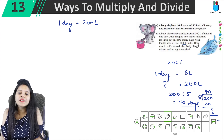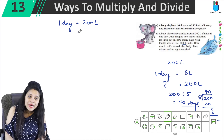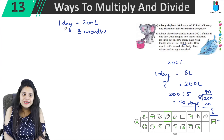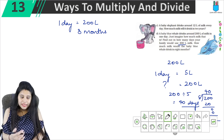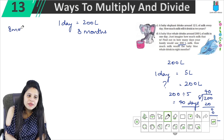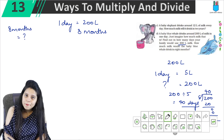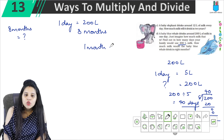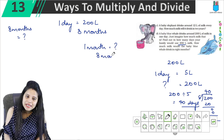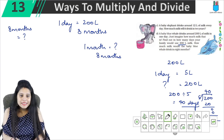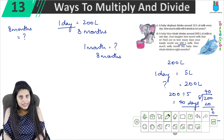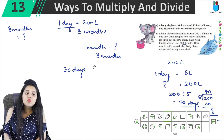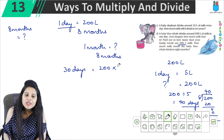How much milk would the baby blue whale drink in 8 months? The whale drinks 200 liters per day. Since 1 month is 30 days, and we need 8 months — first find the amount in 1 month: if it's 200 liters in 1 day, then in 30 days it will be 200 into 30.